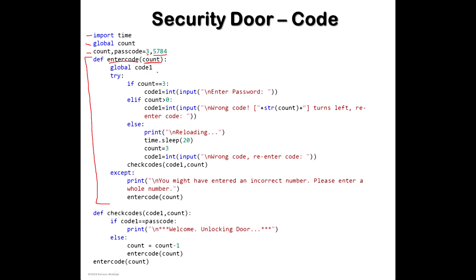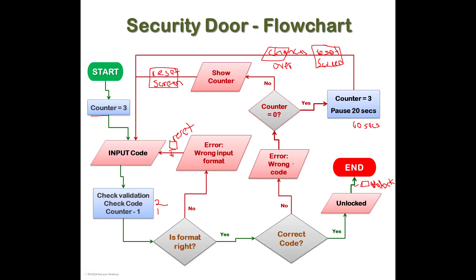Global variable 'code_one'. We use a try/except to check for errors. In the try block: if count equals 3, 'code_one' is set to integer input of the password — whatever password they enter must be an integer, no decimal points or other characters, stored in 'code_one'. Otherwise, elif if count is greater than zero — not equal to three but greater than zero, so it could be two or one.